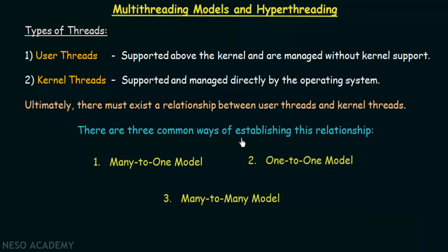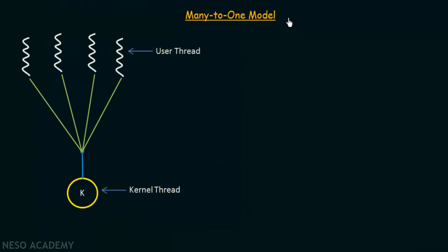There are three common ways of establishing the relationship between user threads and kernel threads. The first is the many-to-one model, the second is the one-to-one model, and the third is the many-to-many model. We will see each of these models one by one — how they function, what their limitations are, and which one is best. The first model is the many-to-one model.